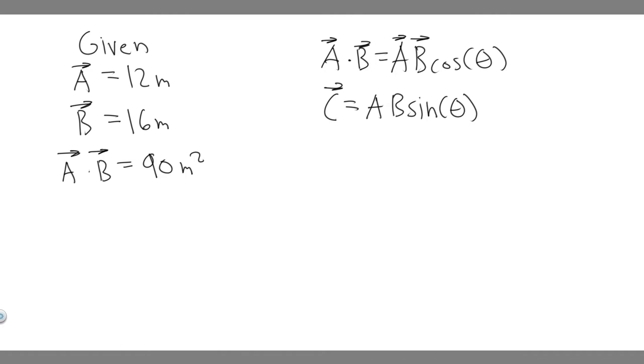So in this problem, what we're trying to find is the magnitude of the vector product. And the way we do that is by using this formula here. So the magnitude C is, this isn't a vector, C is equal to vector A times vector B multiplied by the sine of theta.